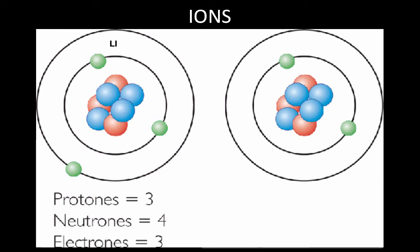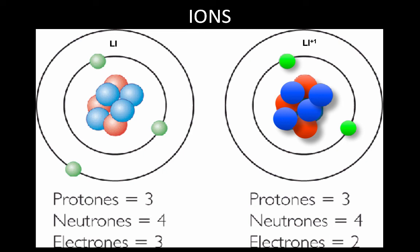This next atom has lost an electron. It is still lithium due to its three red protons. Its mass remains 7 because of the four neutrons. But only two electrons with three protons means that there is a surplus of one proton. This is lithium ion with a charge of plus 1.